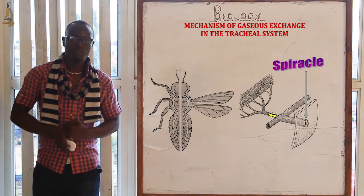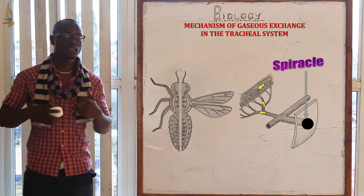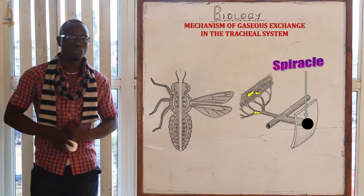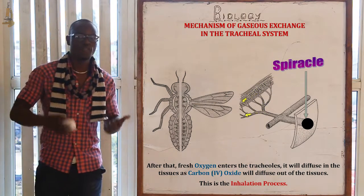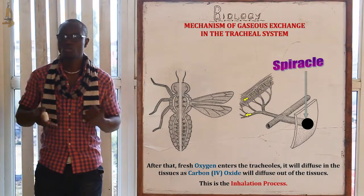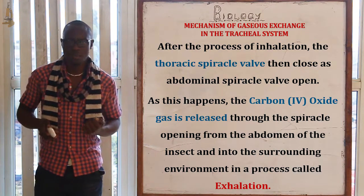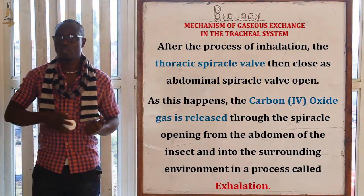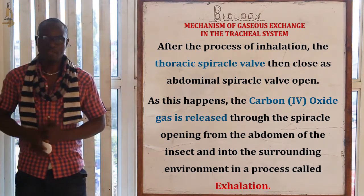When the spiracle valves are open, air is drawn into the tracheal system. The valve then closes and air is forced along the system by muscles. Oxygen diffuses in due to a high diffusion gradient, while carbon dioxide diffuses out into the tracheal system due to a low diffusion gradient. The thoracic spiracle valve closes as the abdominal spiracle valve opens, and gas is released through the spiracle opening into the abdomen of the insect.